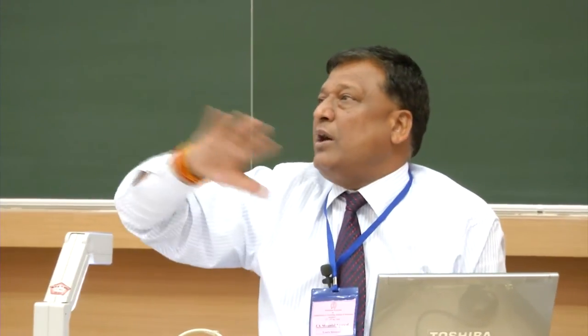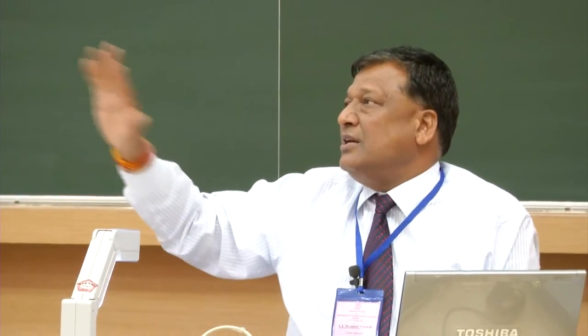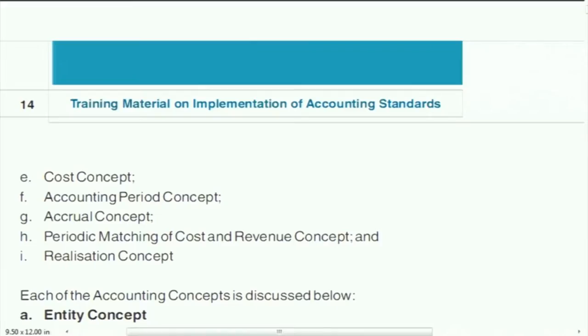Money measurement concept: every transaction must be measured in money — without money measurement you cannot discuss any transaction. Cost concept: everything has a cost. If land is acquired at no cost, you still have to assign a cost — even one rupee to identify the transaction. If given free by the government, you must disclose it; there has to be a cost associated with every transaction.